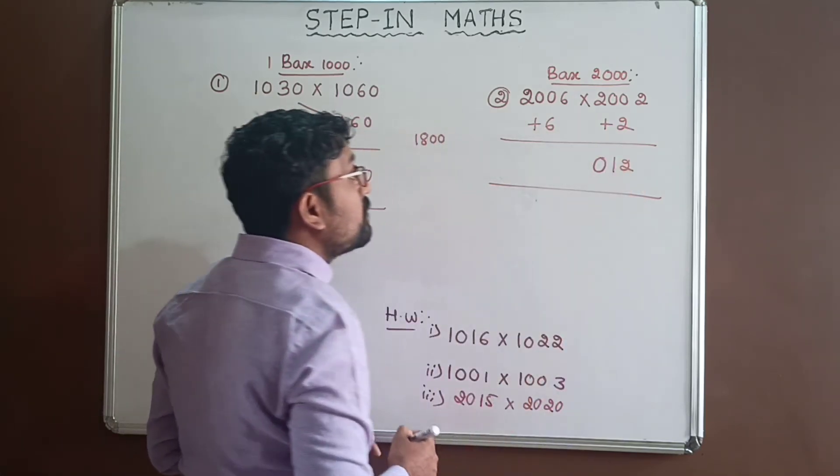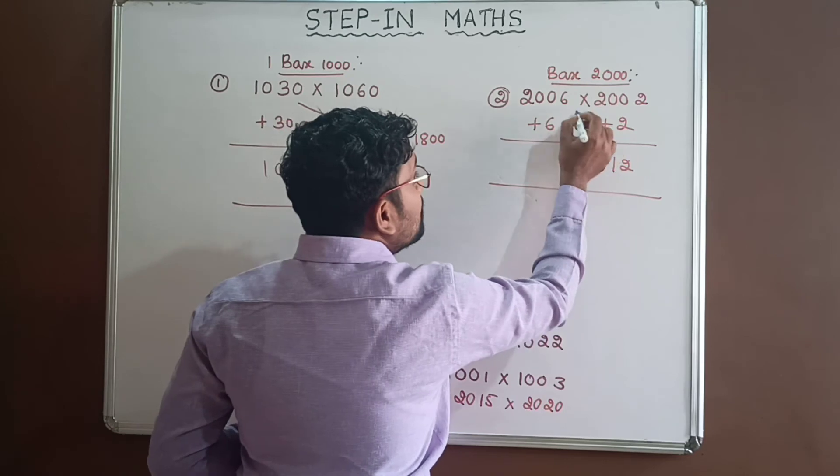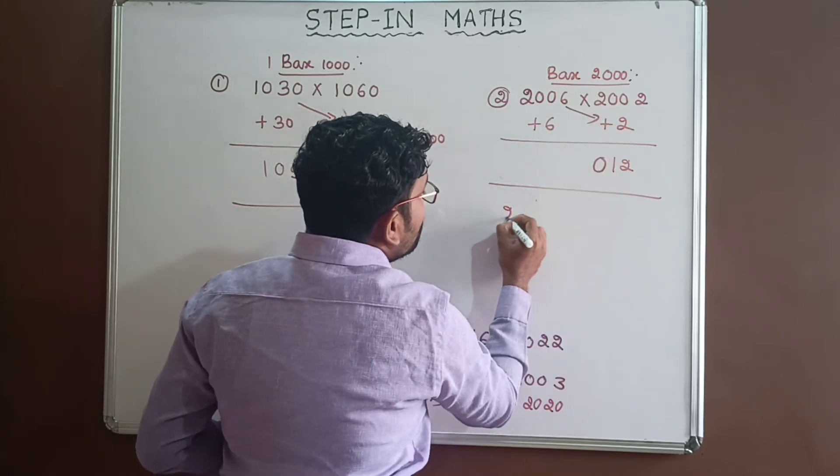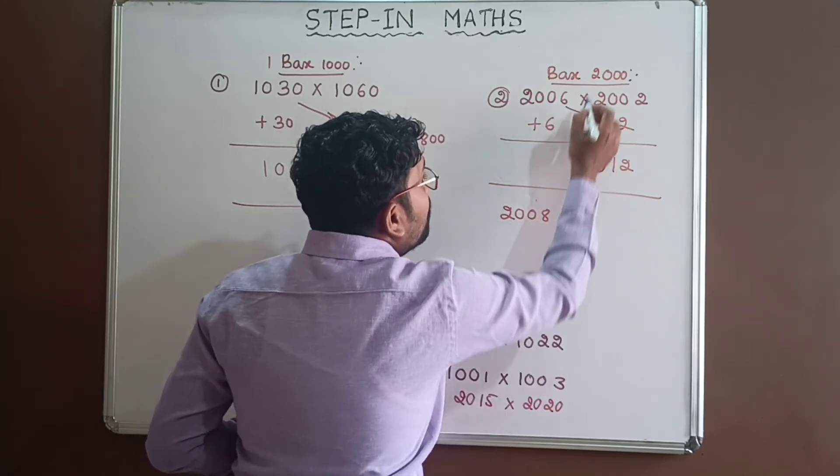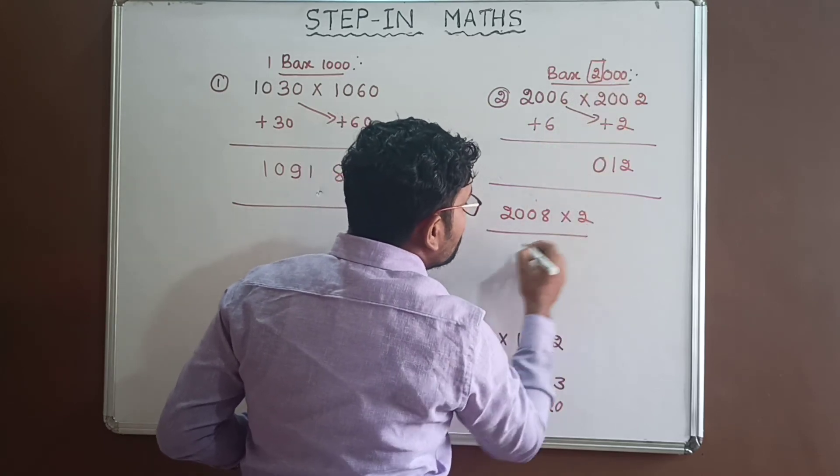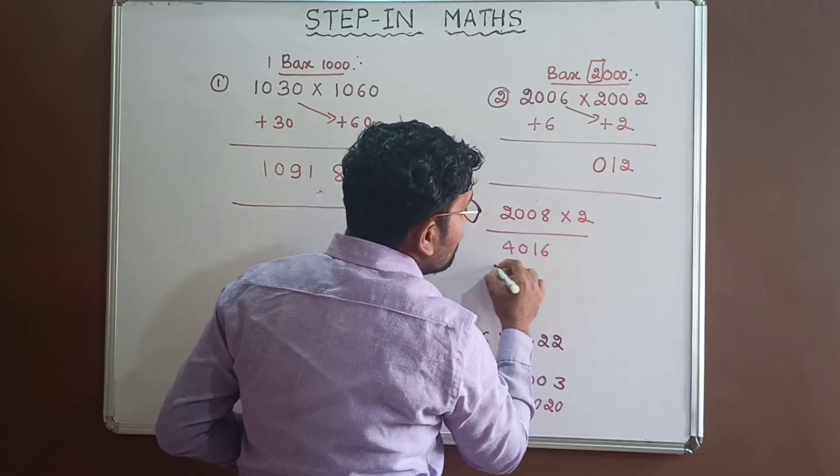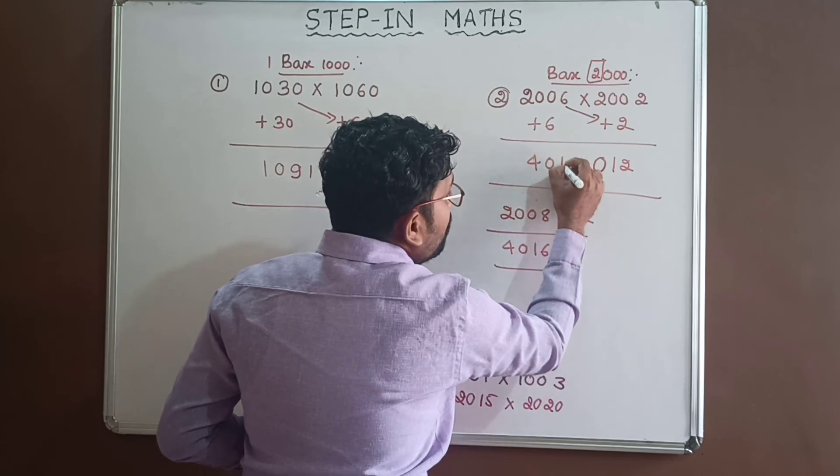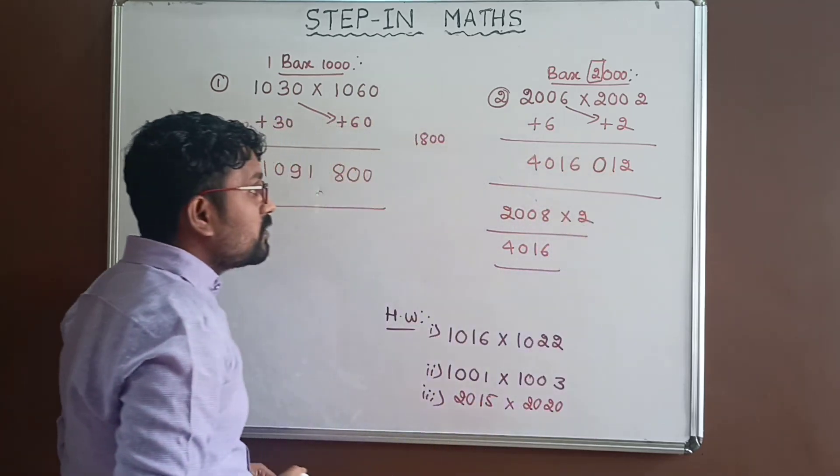So, we need to keep 1 extra 0. 2006 plus 2 is equal to 2008. And base is 2000, so we need to multiply with 2, which is equal to 4016. That is, 4016012 is the answer.